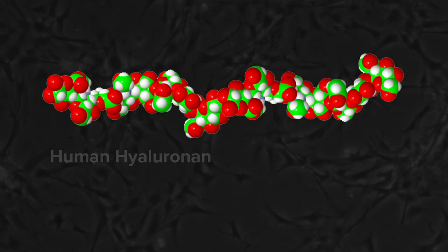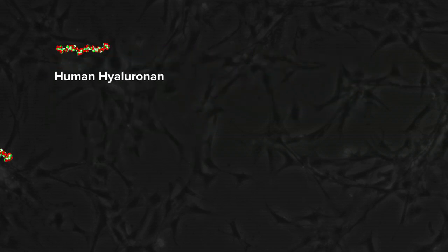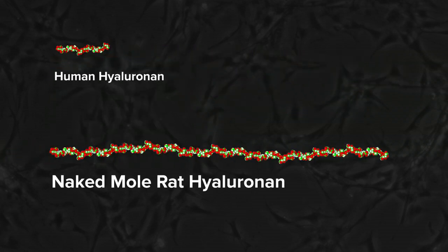What's remarkable about the naked mole rat is that their hyaluronan is very long. Human and mouse polysaccharides are relatively short, but naked mole rat polysaccharides are 6 to 10 times longer. That was really a moment of clarity. We thought, well, this must have something to do with the cancer resistance.